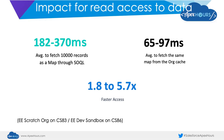When you do measurements, retrieving 10,000 records from SOQL and putting them in a map takes between 180 and 270 milliseconds. Doing the same operation from the org's cache takes only 65 to 97 milliseconds in my experiment on a CS83 sandbox. That's about two to three times — and up to 5.7 times — faster data access.